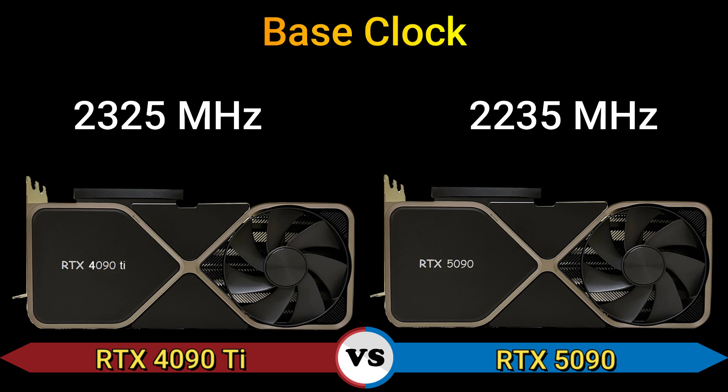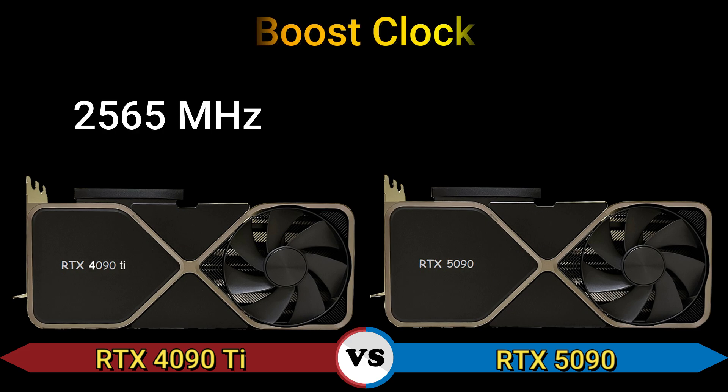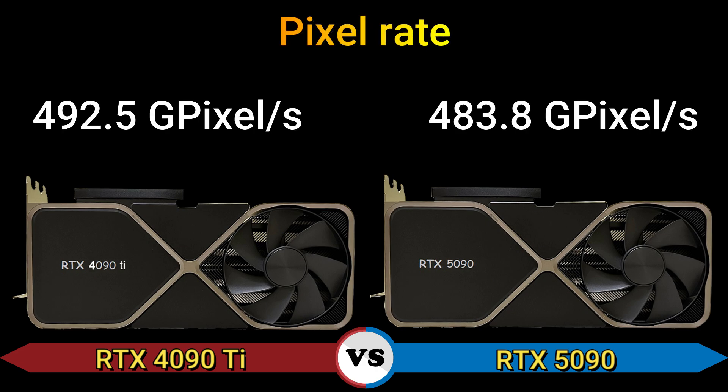Base clock: 2325 MHz and 2235 MHz. Boost clock: 2565 MHz and 2520 MHz. Pixel rate: 492.5 GP/s and 483.8 GP/s.